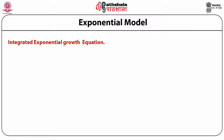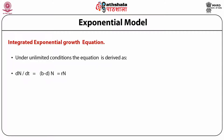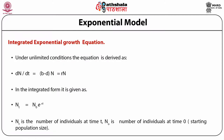Under unlimited conditions, the growth equation dn/dt = rN can be integrated and written as Nt = N0 · e^(rt), where Nt is the number of individuals at time t and N0 is the number of individuals at the start of the population. This equation can be equated with compound interest, where N0 is the starting principal, r is the rate of interest, and t is the time. Just as interest is compounded, similarly the population shows a compounded growth rate.